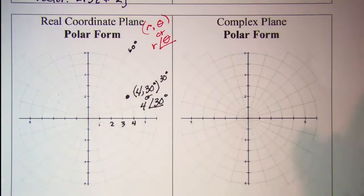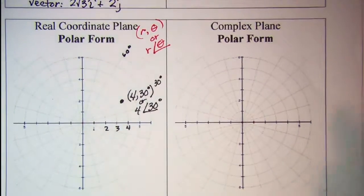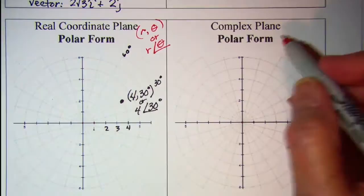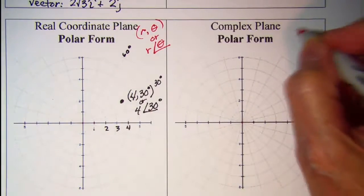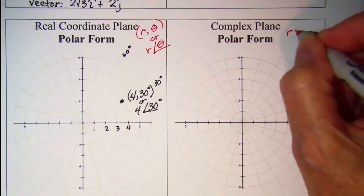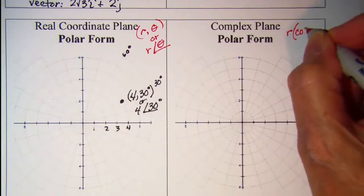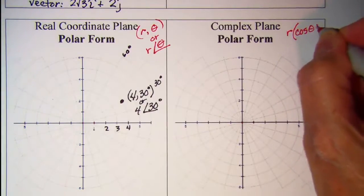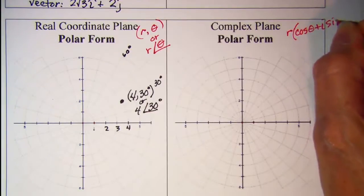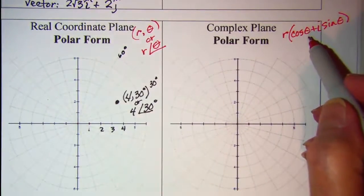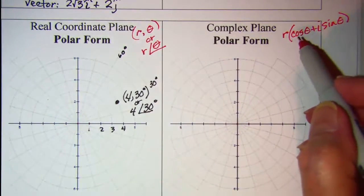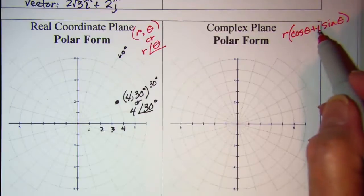Now if we look at the notation for the complex plane, we're going to write our points as r times the cosine of θ plus i sine of θ. So we still have the r and the θ involved, but this time we have the imaginary unit i involved.